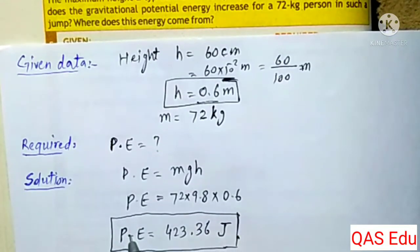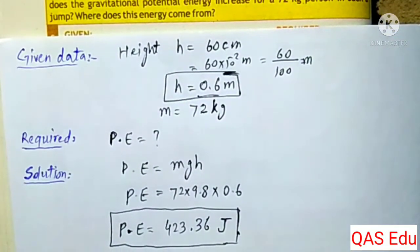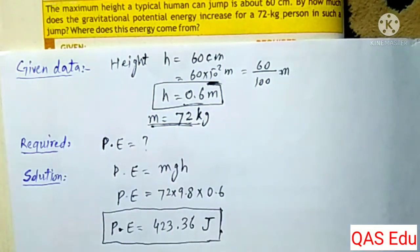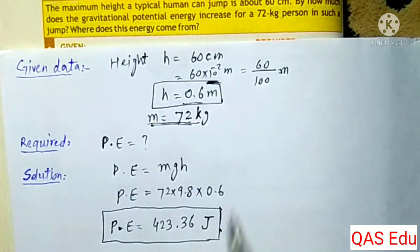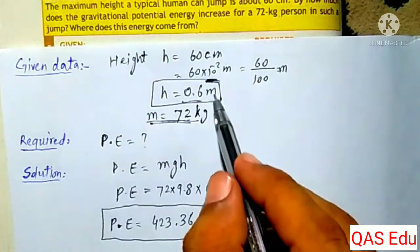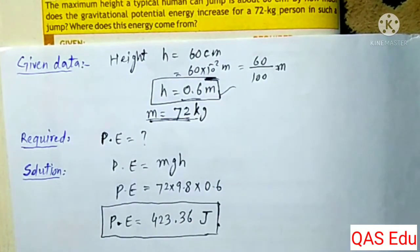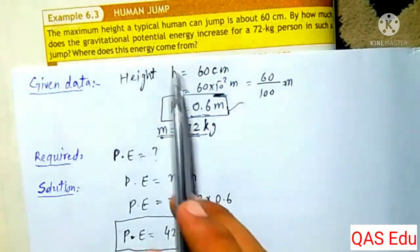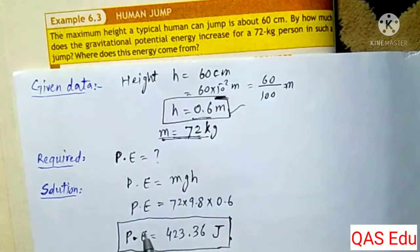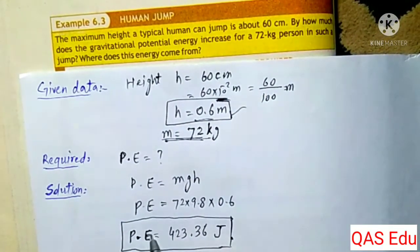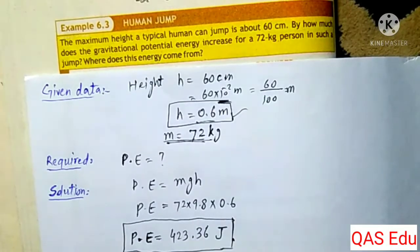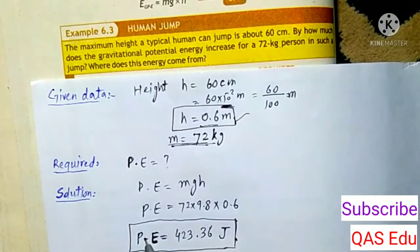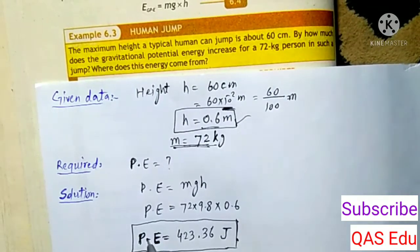The first part asks: where does this energy come from? The energy comes from the muscles — if you jump, the energy comes from the muscles and stress in your body. The potential energy gained is less than the total muscle energy expended.